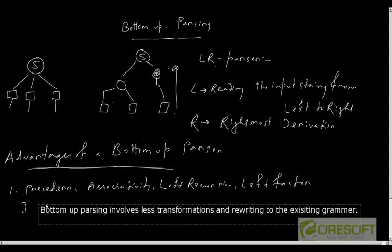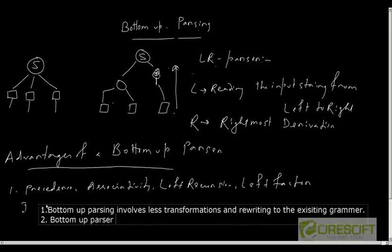The second advantage is that bottom-up parsing accepts a wider class of languages. The class of languages accepted by a top-down parser is called LL(k) grammar, but a bottom-up parser covers more classes of languages and can create a parse tree for more grammars and languages compared to a top-down parser.